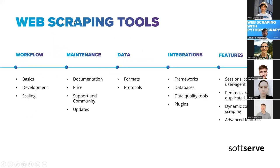What should you pay attention to when choosing scraping tools? There are five categories, each important. First is workflow — it should be user-friendly, with easy start, easy development, and easy scaling for enterprise-level projects. The next is maintenance — the tool should be well-documented, have a low price or be free preferably, have good support and community, and regular updates.